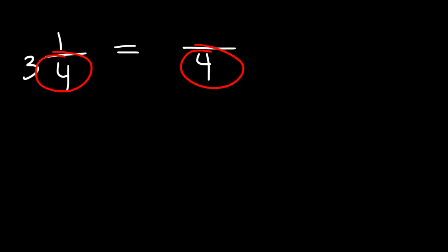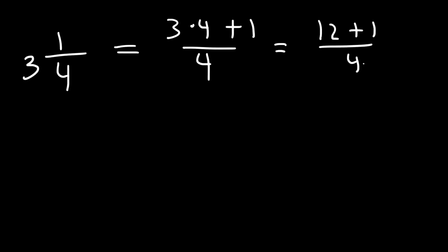Next you need to multiply 3 and 4 and then add 1. So we're going to have 3 times 4 plus 1. 3 times 4 is 12, and 12 plus 1 is 13.